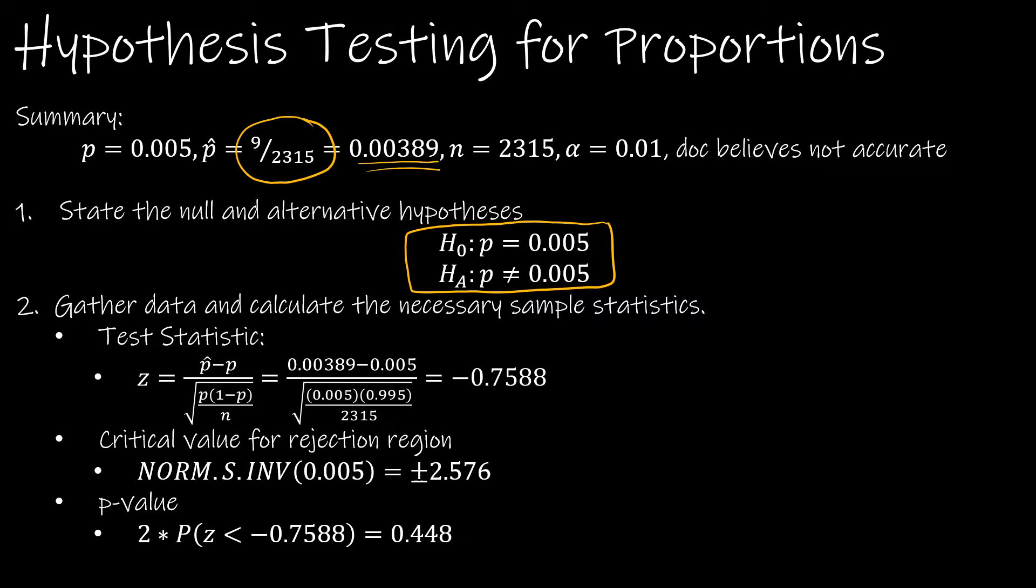Now the critical value: again, this is a two-tailed test. So because it's two-tailed, when we look at that curve and we know our alpha level is 0.01, that means on each side alpha is split into two parts. So this is not alpha, this is alpha divided by 2, so it's 0.01 divided by 2, which is 0.005.